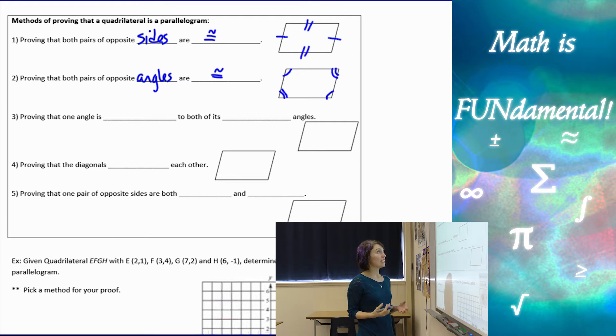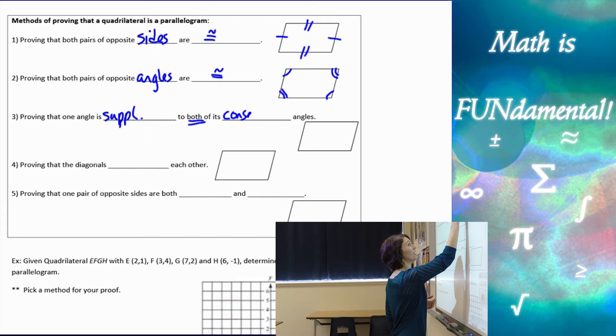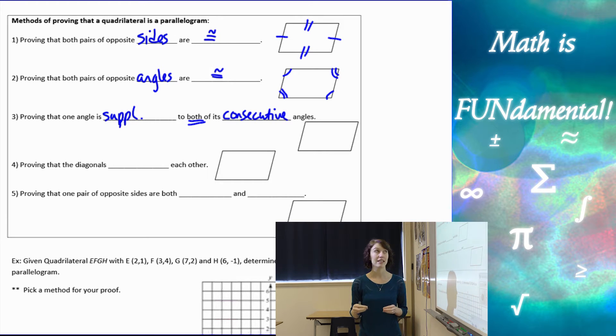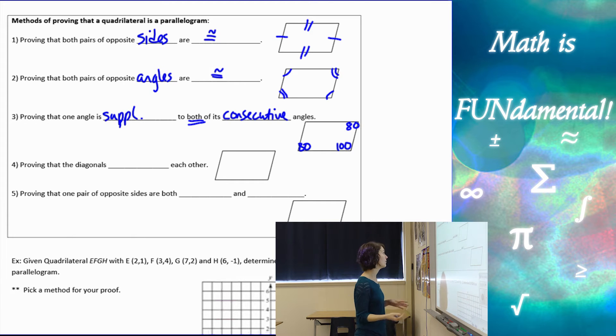The third way to prove it is by proving that one angle is supplementary to both of its consecutive angles. You have to prove that it's supplementary to both angles on either side of it. If this one was 100 degrees, I would have to prove that this one was 80 and this one was 80.